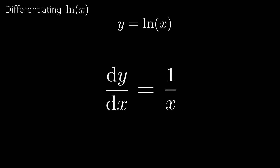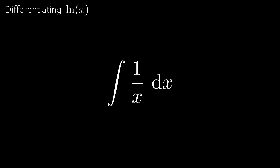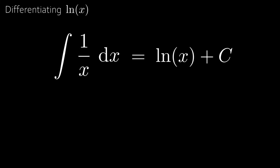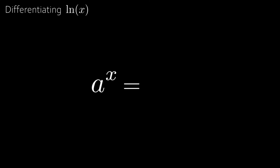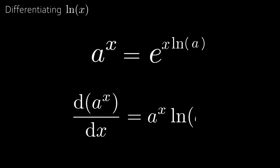This unbelievable connection has very important consequences. For example, you cannot calculate the integral of 1/x dx the normal way, but here we show that it equals ln(x). This relation is also why the harmonic series — the sum of all 1/n — diverges to infinity. A very useful trick is that we can write aˣ as e^(ln(aˣ)) = e^(x·ln a), and by the chain rule the derivative of aˣ equals aˣ · ln(a).